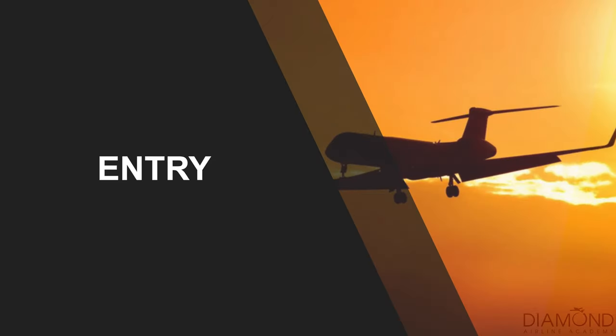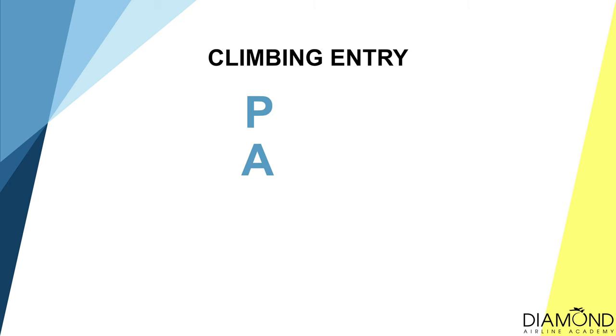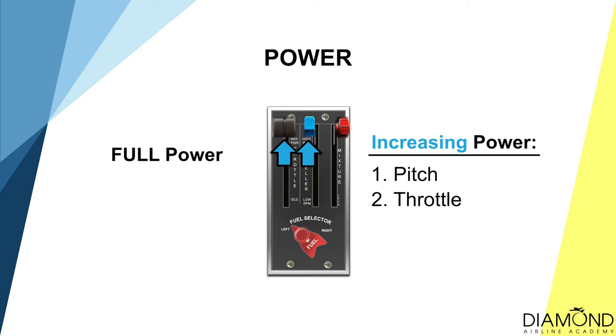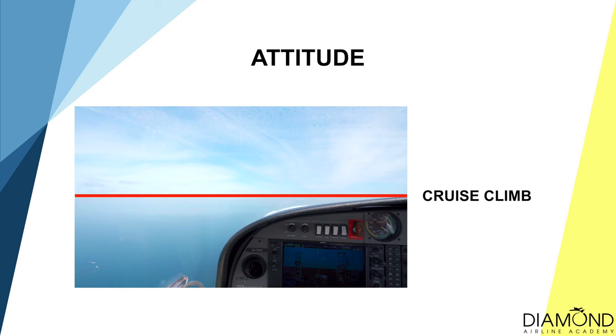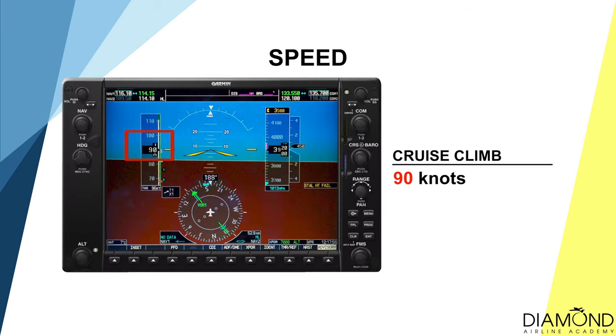After ensuring the airspace in the vicinity is clear of other traffic, we move to the entry cycle. For a climbing turn, it is P, A, S, T. P is Power — apply full throttle for climbing. A is Attitude — for demonstration purposes we'll use the cruise climb: raise the nose until the horizon is on the dashboard. S is Speed — during a cruise climb, speed should be about 90 knots. T is Trim — trim until hands-off state.